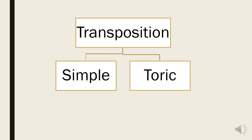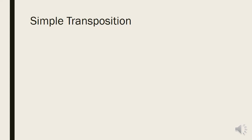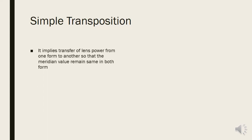Transposition is of two types: simple and toric. Simple transposition involves converting a plus cylinder prescription into minus cylinder form and vice versa. Toric transposition is important for generating lens power or selecting the curvature power for a specific lens. For the same cross power, you can find two different prescriptions — one with a plus cylinder and one with a minus cylinder.